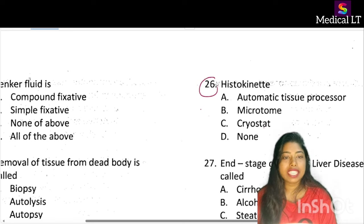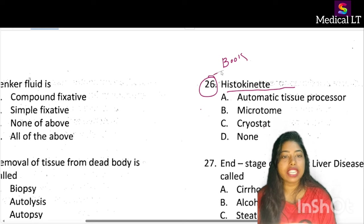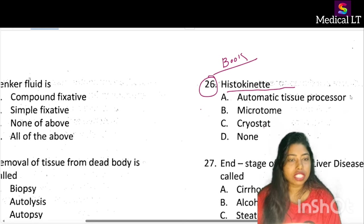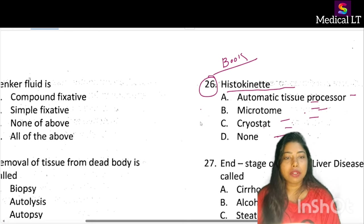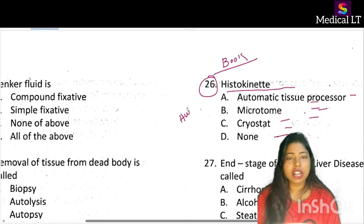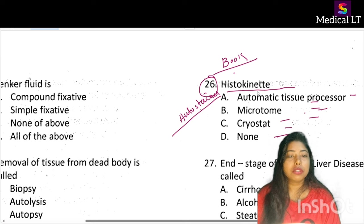Question number 26: what is a histokinete? Options are automatic tissue processor, microtome, cryostat, or none. If anyone knows the answer, let me know in the comment section. A histokinete — is it an auto stainer, which is available nowadays, or is it a tissue processor or a microtome? The correct answer will be discussed.